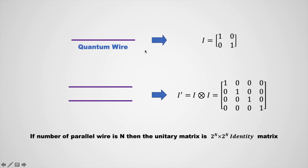Here you can see a quantum wire which is represented by a 2 by 2 identity matrix. Here you can see parallel quantum wire which is represented by a 4 by 4 identity matrix. And if the number of parallel wires is n, then its identity matrix is a 2 to the power n cross 2 to the power n identity matrix.